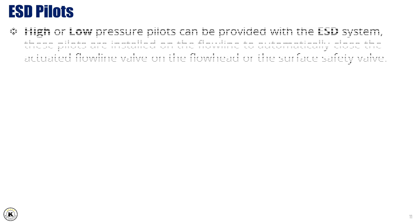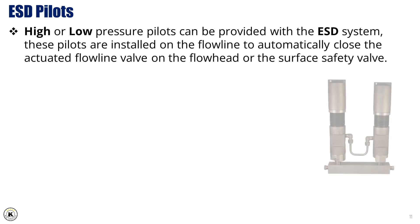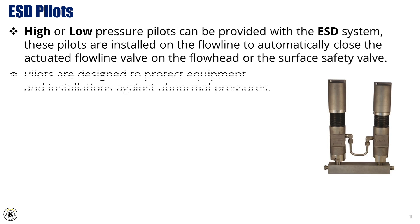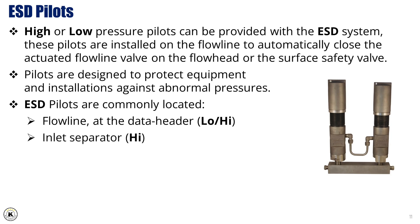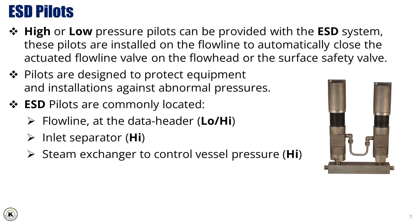ESD pilots: High or low-pressure pilots can be provided with the ESD system. These pilots are installed on the flowline to automatically close the actuated flowline valve in the flow head or the surface safety valve. Pilots are designed to protect equipment and installations against abnormal pressures. ESD pilots are commonly located on the flowline at the data header (low and high pilots), on the inlet of the separator (high pilot), and on the steam exchanger to control vessel pressure (high pilot).